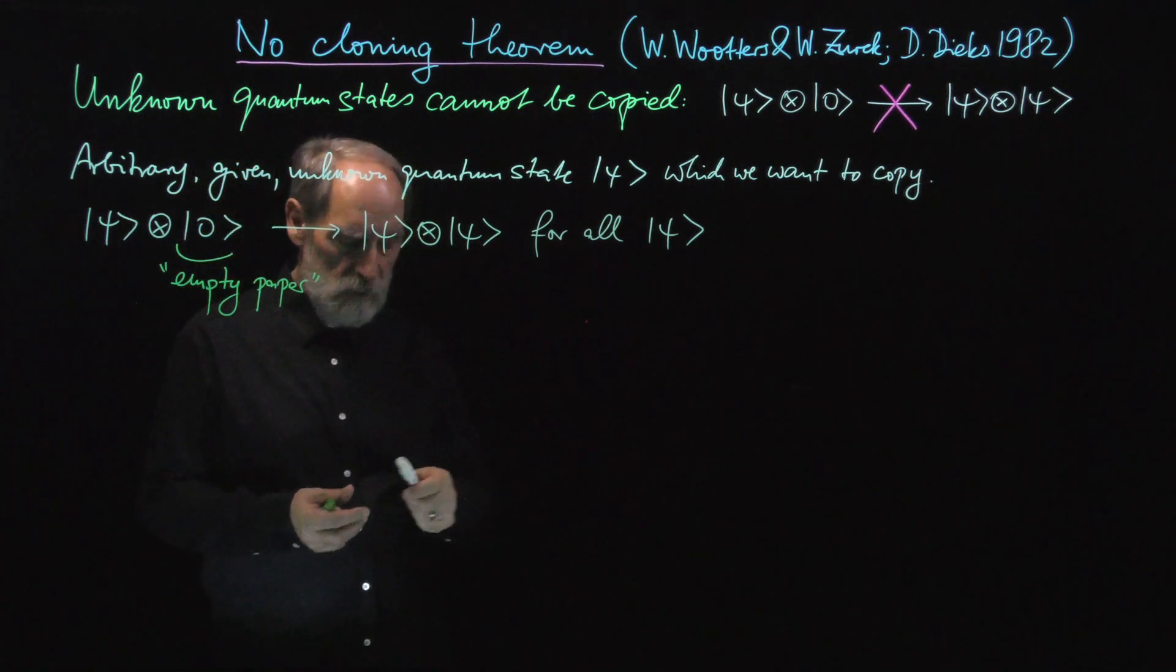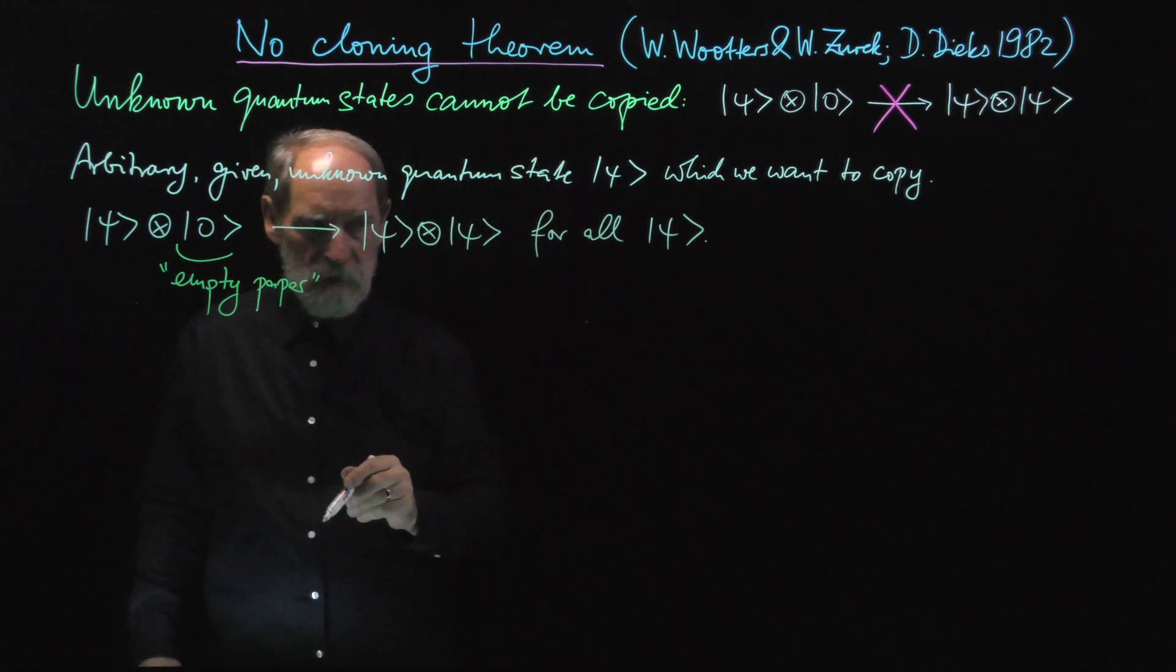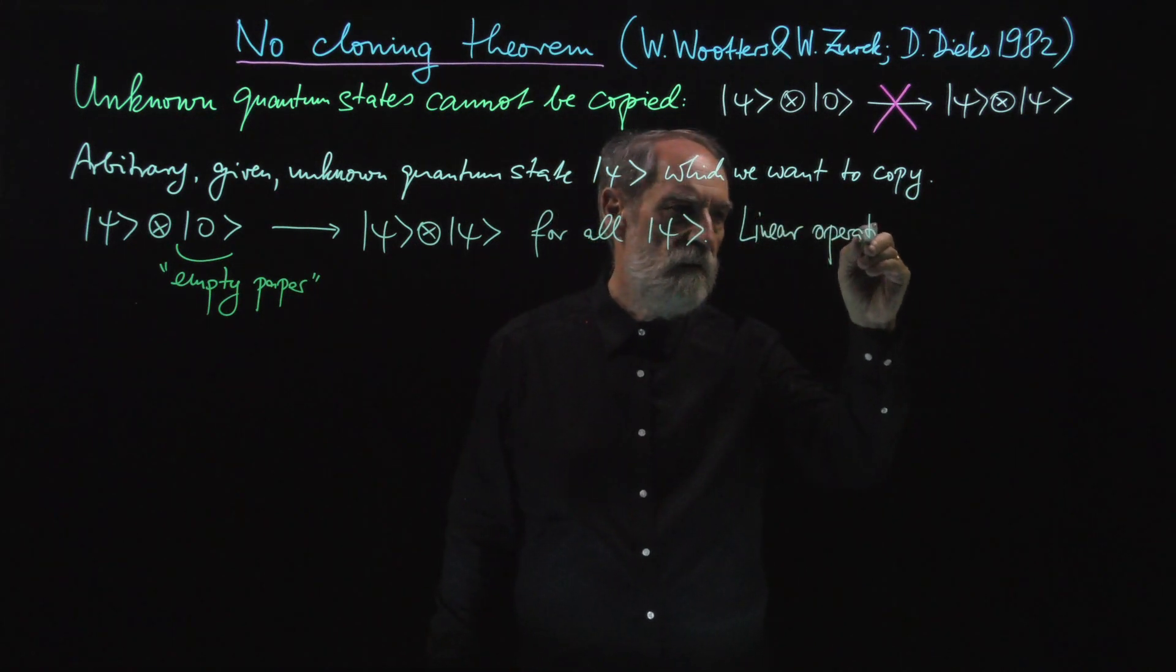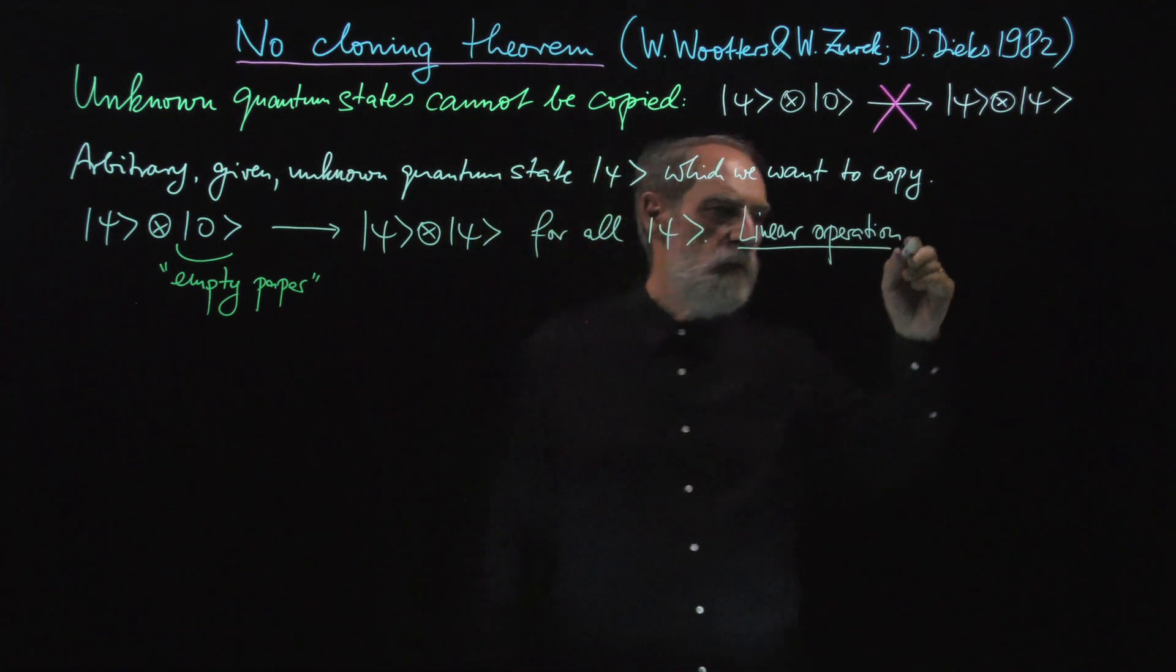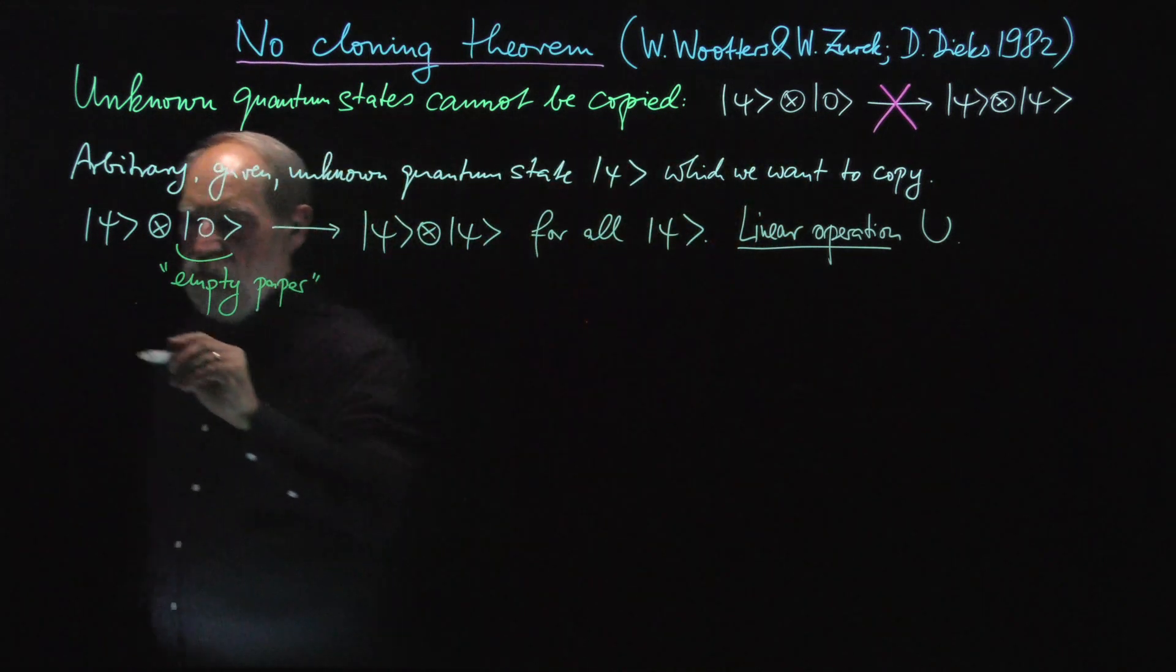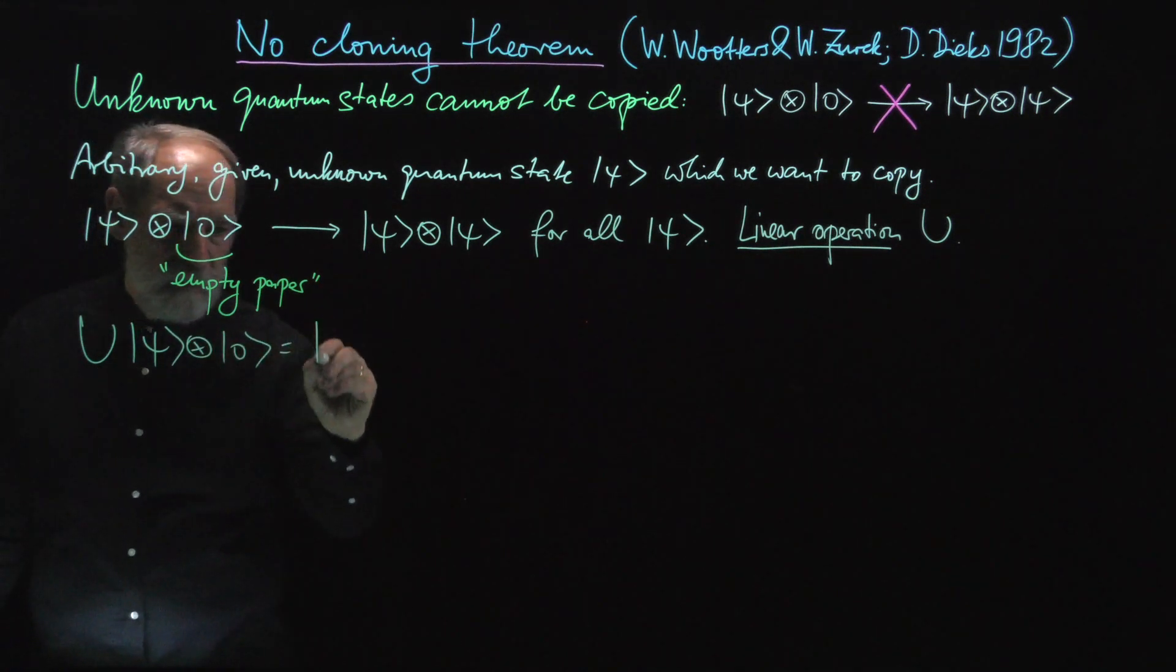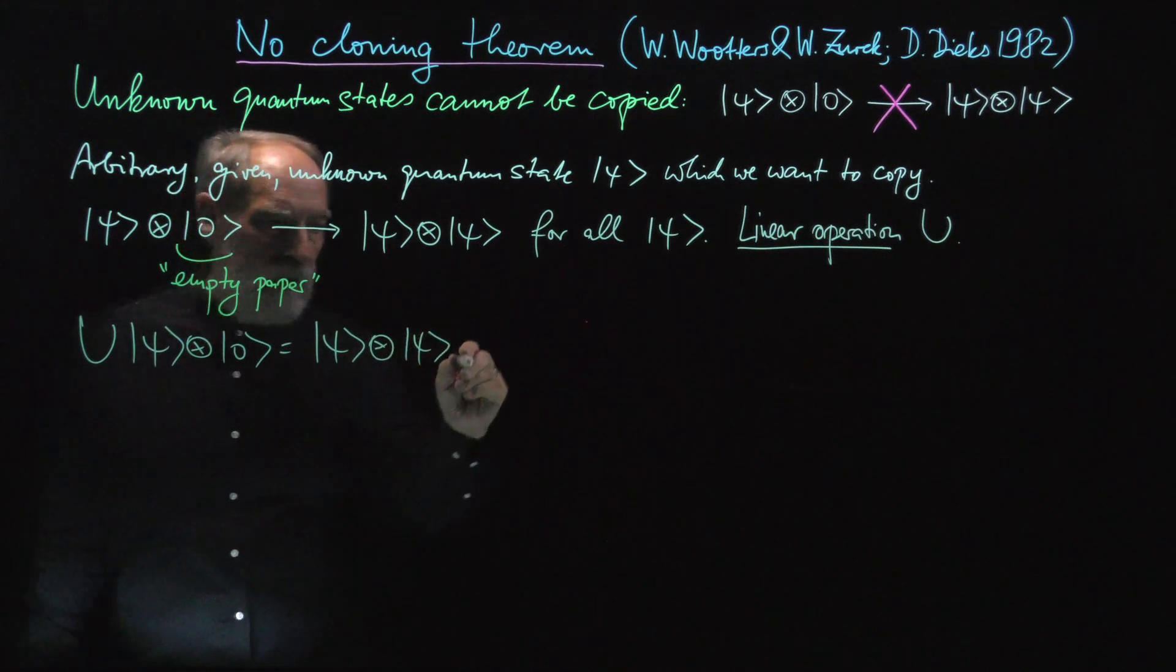So in quantum mechanics this is done by a linear operation. And this linear operation, let me call it U, is such that U applied to psi tensor zero gives us psi tensor psi for all psi.